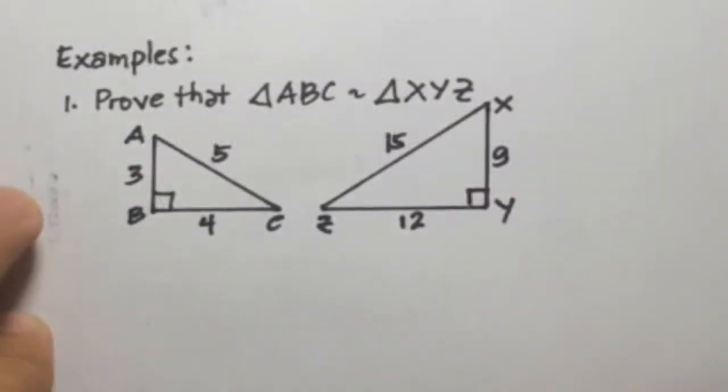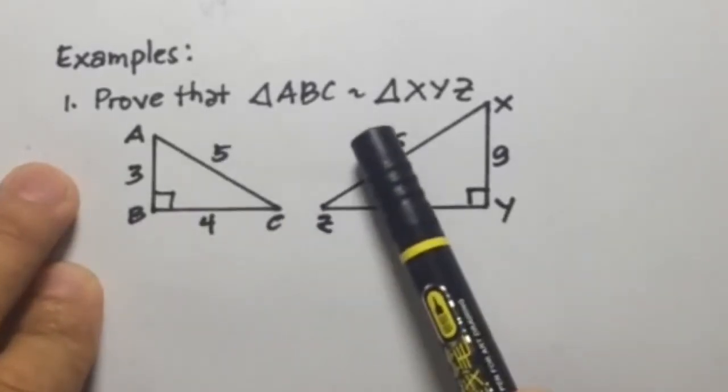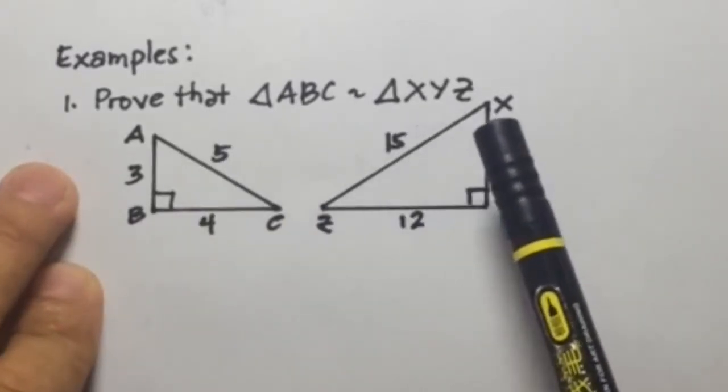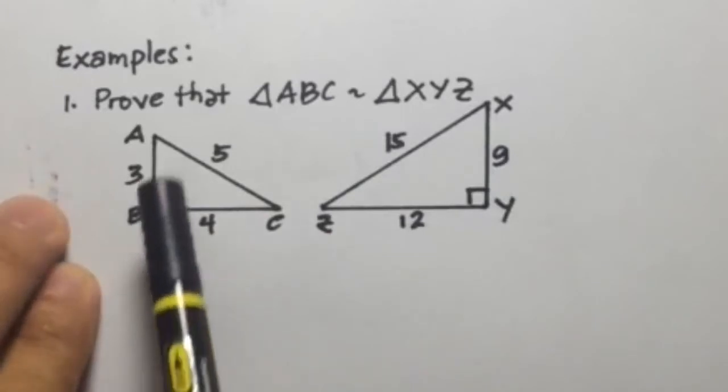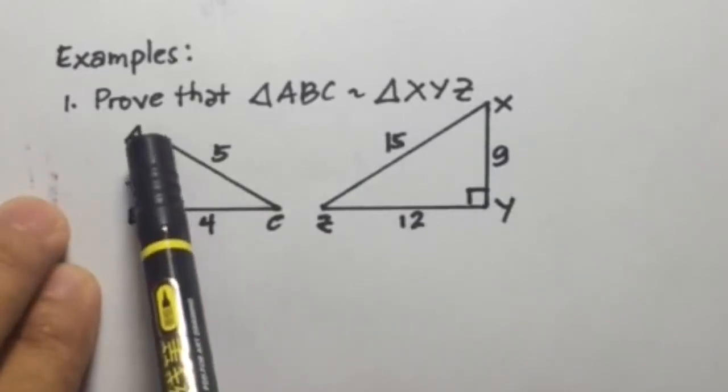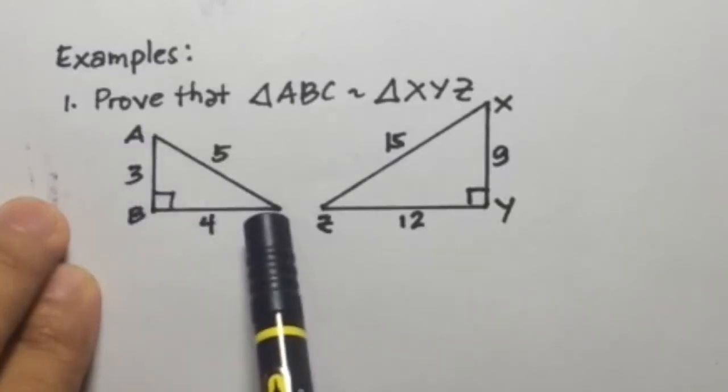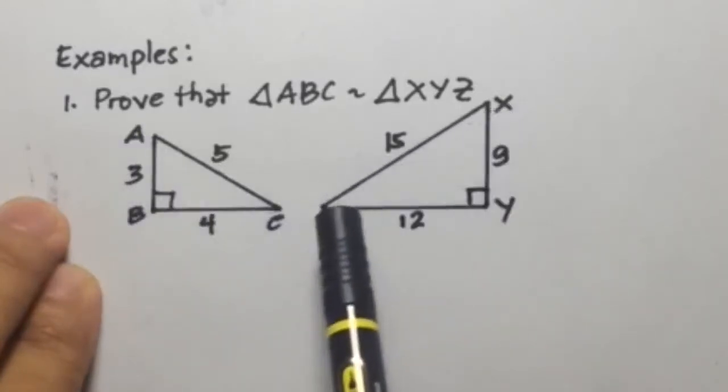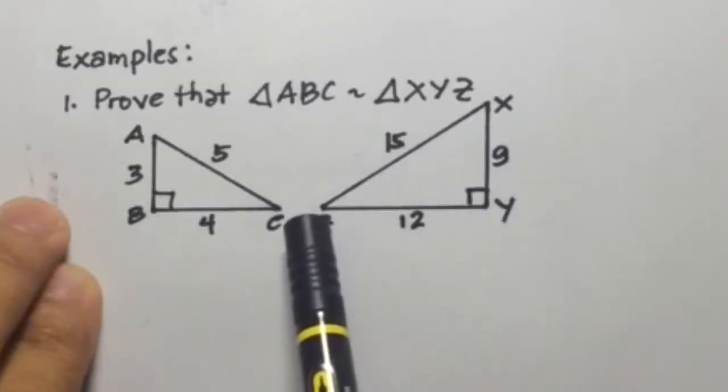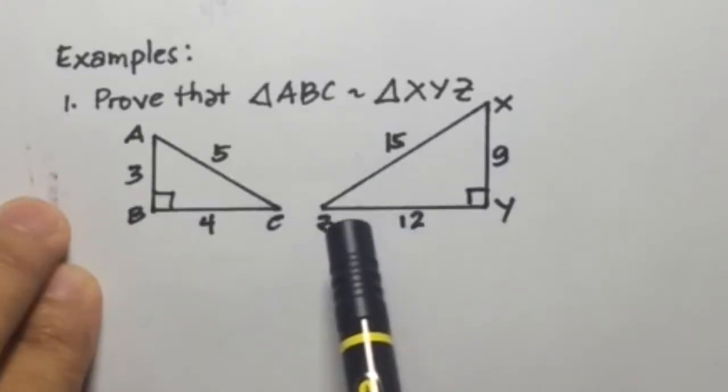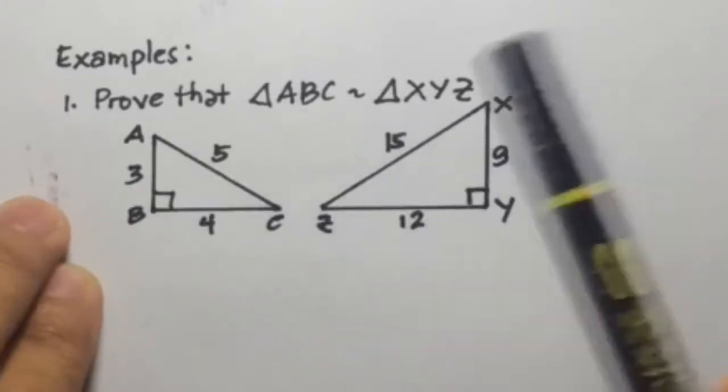Okay, let's have examples here. Number one, prove that triangle ABC is similar to triangle XYZ. So for ABC, AB is 3, BC is 4, AC is 5. For triangle XYZ, XY is 9, ZY is 12, and XZ is 15.